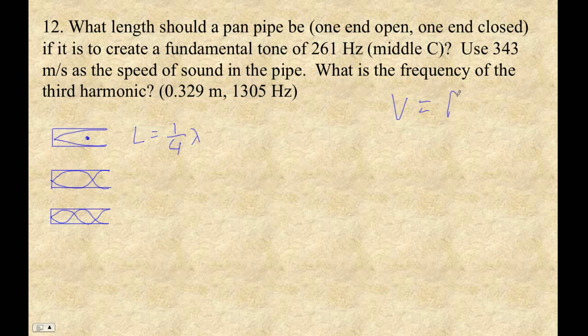So V is F lambda. Therefore, lambda is V over F, right? So in this case, it's 343 is our velocity. All right, so that's this guy here. And then here's our frequency. Divide that by 261 hertz. So 343 divided by 261 is 1.31418 meters.